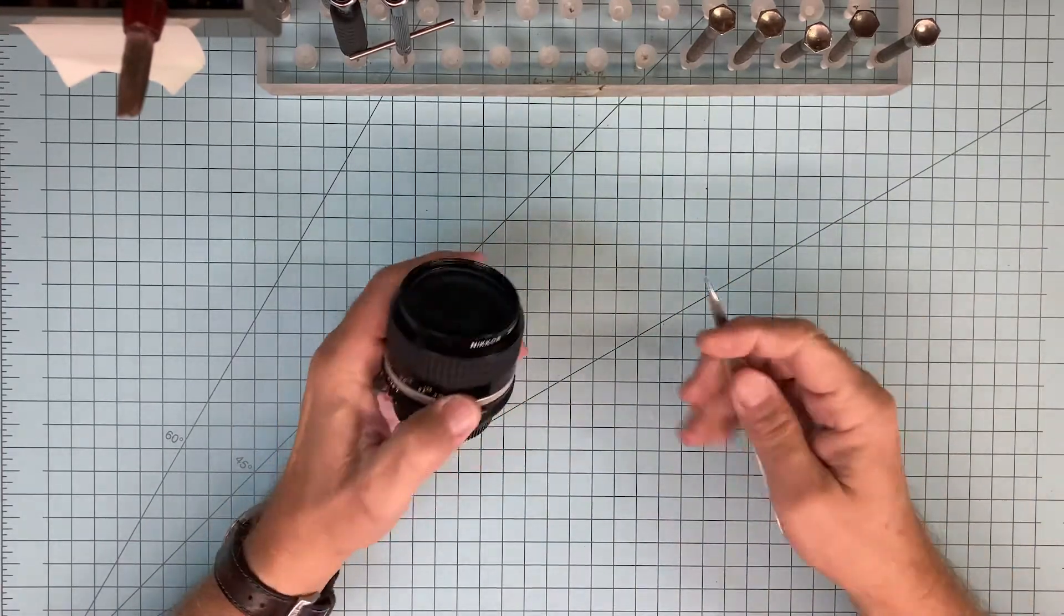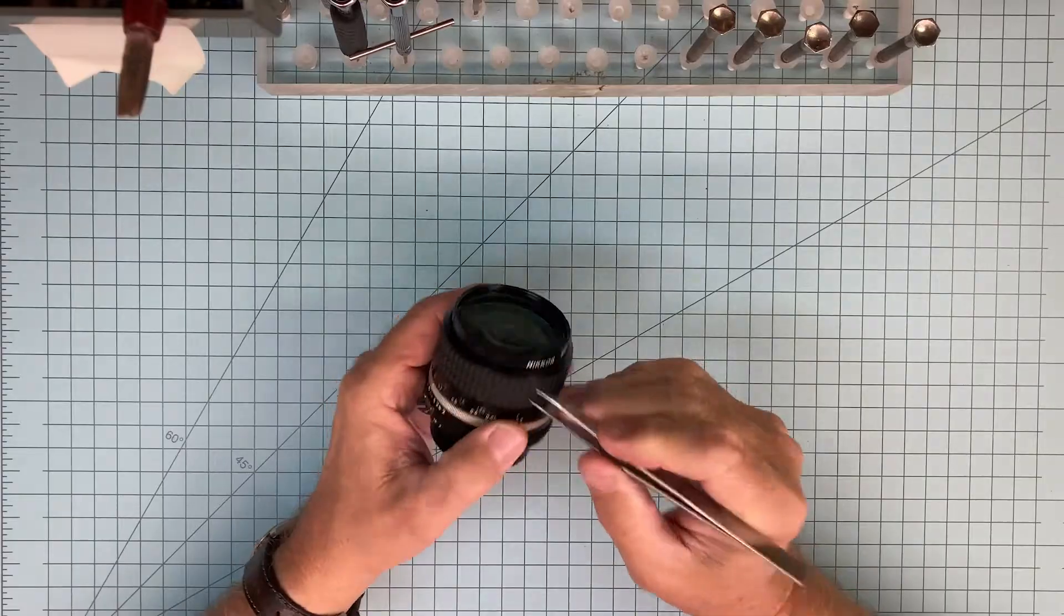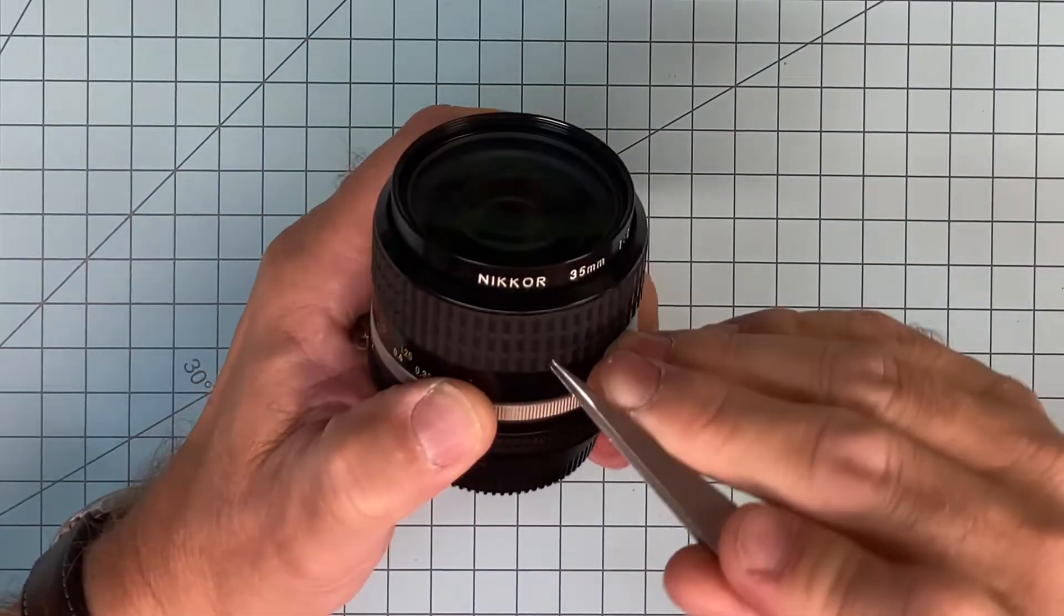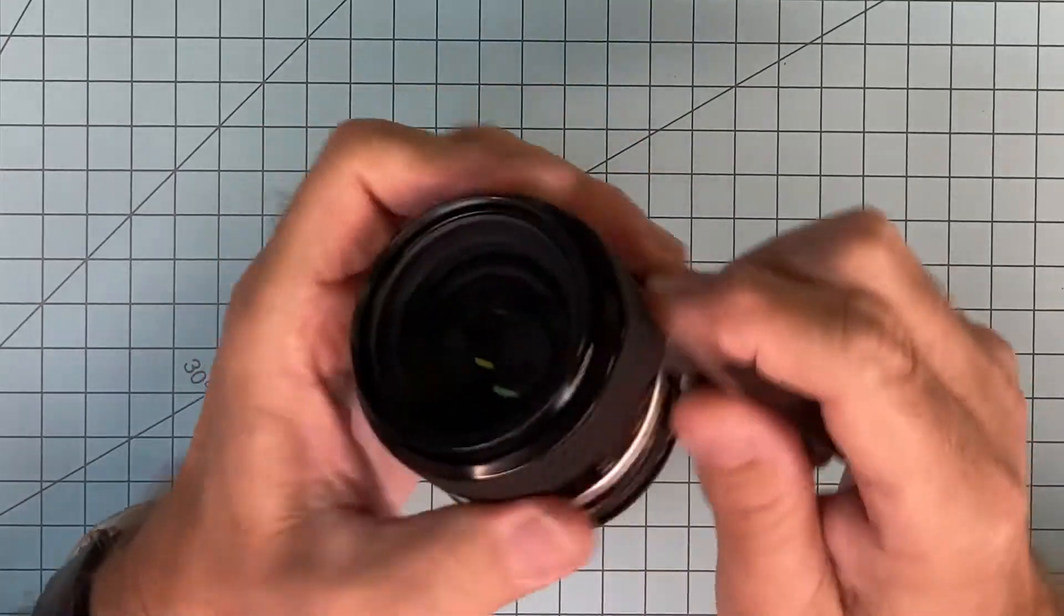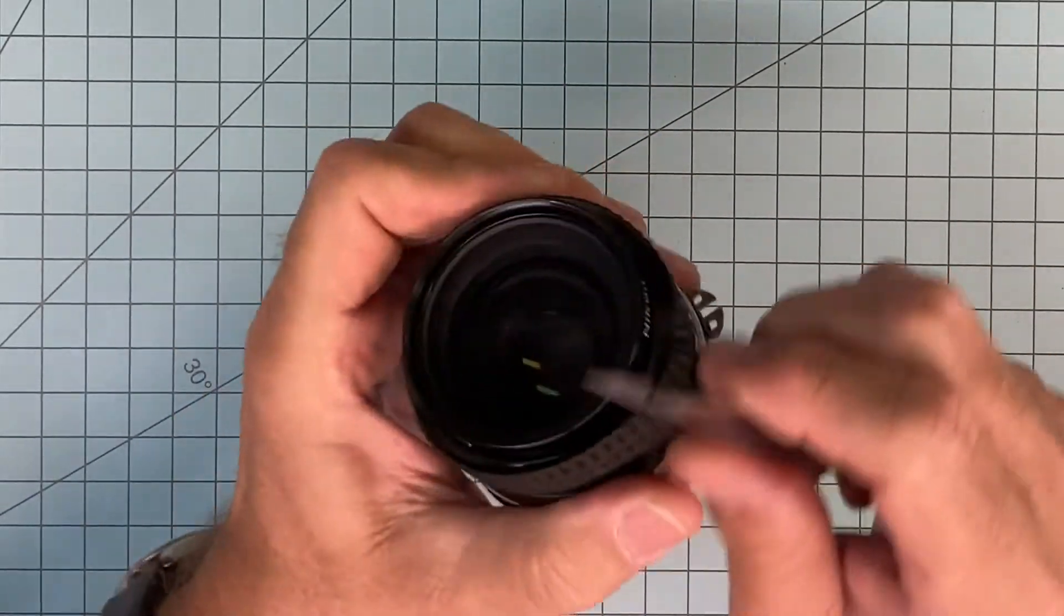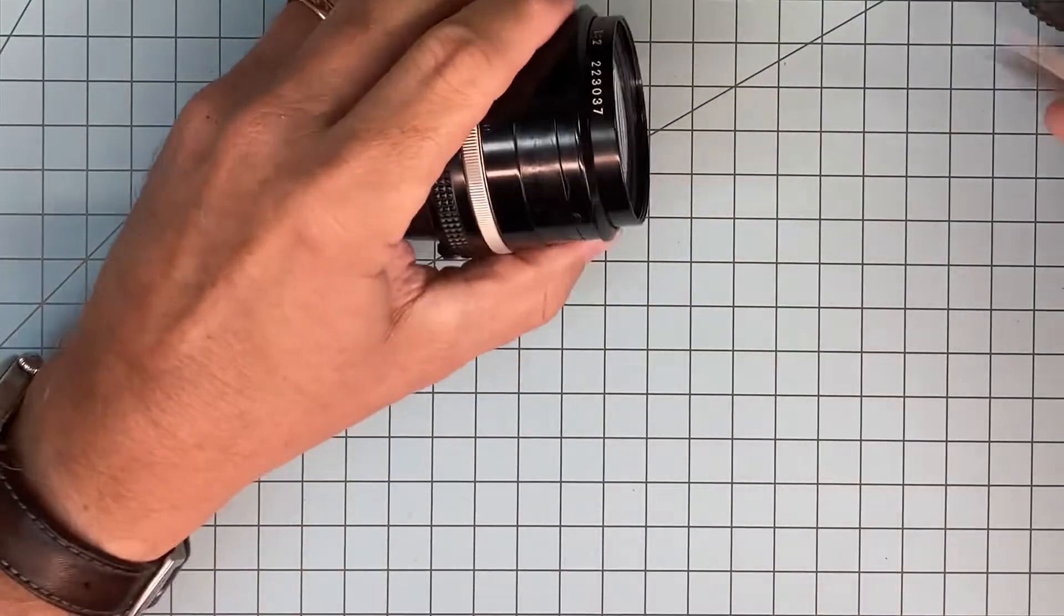My first thing I want to do is get this rubber ring off. They're usually just lightly glued, so I just get underneath it, come around, break any glue that might be on it, and out it comes.